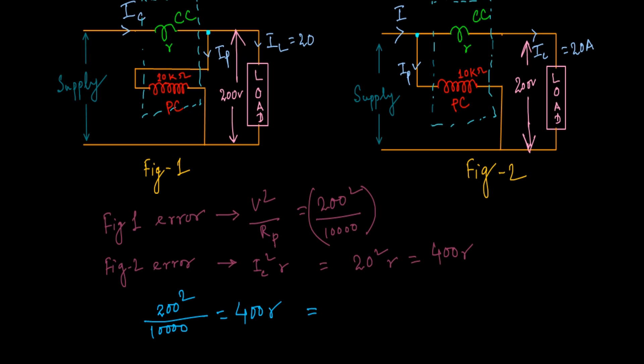From here we can get the value of R equals 0.1 ohm. So if we make R equal to 0.1 ohm in both connections, then the errors will be the same. Clear?